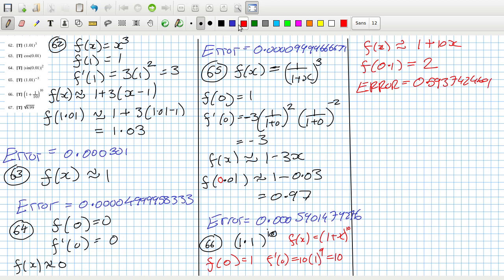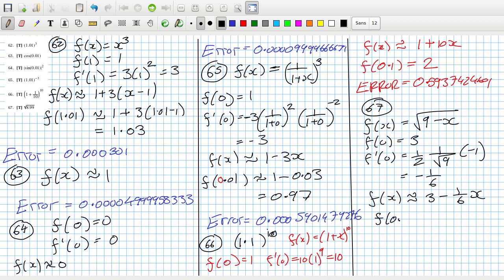67, say f of x equals root 9 minus x. F of 0 is 3, and f derivative of 0 is a half 1 over root 9 times minus 1, so that's minus 1 over 6.